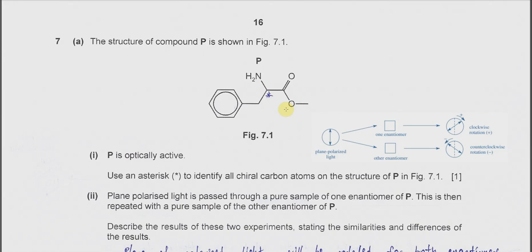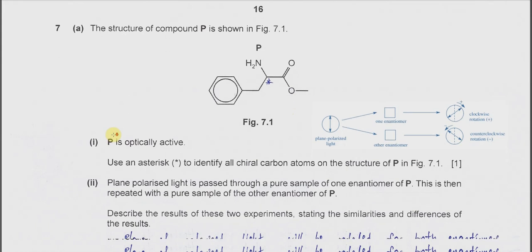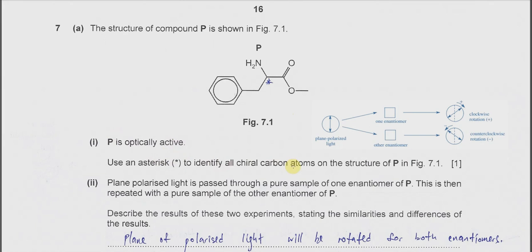Question 7a. The structure of compound P is shown in figure 7.1. Part 1: P is optically active. Use a asterisk to identify all the chiral carbons in P. In this structure you will get one chiral carbon, because this carbon has four different groups — one, two, three, and another hydrogen. So four different groups, that's why this is a chiral carbon.